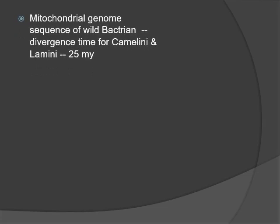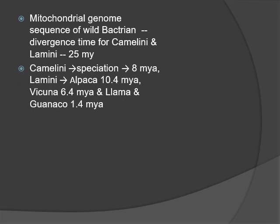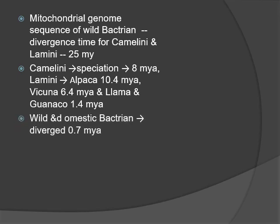The complete mitochondrial genome sequence of wild Bactrian camels indicates that the divergence time for Camelini and Lamini was estimated to be 25 million years. In the tribe Camelini, Bactrian camel and Dromedary speciation may have begun 8 million years ago. In tribe Lamini, Alpaca first appears 10.4 million years ago, then Vicuña species began 6.4 million years ago, and then Lama and Guanaco diverged about 1.4 million years ago. Wild and domestic Bactrian camel have separate maternal origins and the two subspecies diverged some 0.7 million years ago.